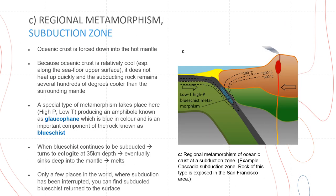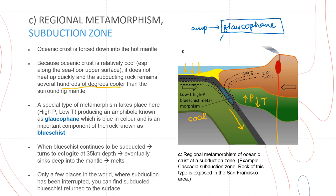When the oceanic crust gets subducted, it is forced down into the hot mantle. Because the oceanic crust is relatively cool — especially along the seafloor upper surface — it won't heat up as quickly, and the subducting rock will remain several hundreds of degrees cooler than the surrounding mantle. A very special type of metamorphism takes place here: high pressure but low temperature. This produces an amphibole known as glaucophane, which is blue in color, and this gives blueschist its name.